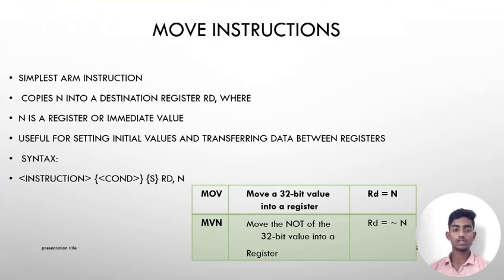Move instructions are the simplest ARM instructions. They copy N into a destination register RD, where N is a register or immediate value. Useful for setting initial values and transferring data between registers. MOV moves a 32-bit value into a register. MVN moves the NOT of the 32-bit value into a register.